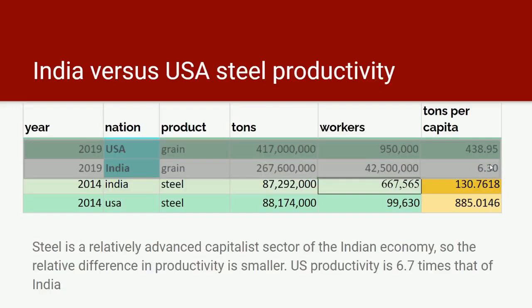If we shift from agriculture to steel, both India and the USA are big steel producers and produce almost exactly the same amount — 87 or 88 million tons. But the US produces its 88 million tons with just under 100,000 workers. This was in 2014, the last year for which comparable figures for both countries were available; the Indian steel industry has grown considerably since then. In India in 2014 there were 667,000 steel workers, so each Indian steel worker produced 130 tons, while each American steel worker produced 885 tons.